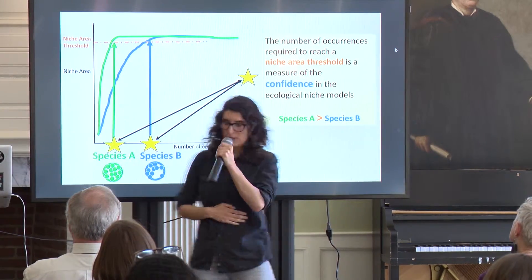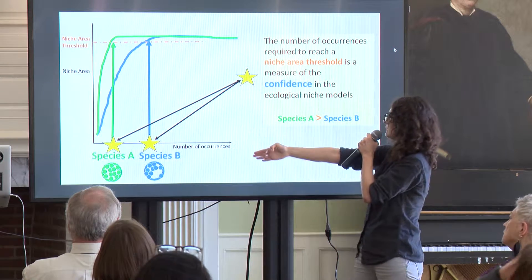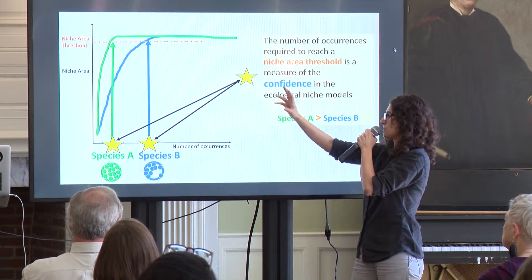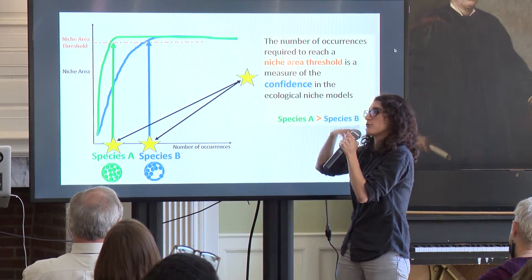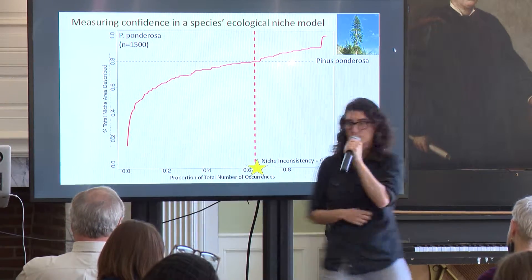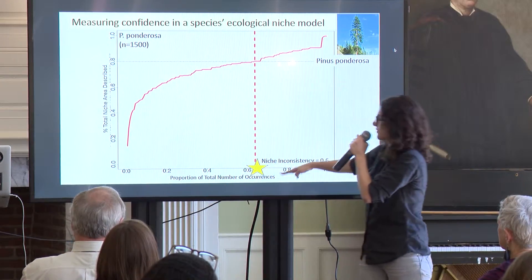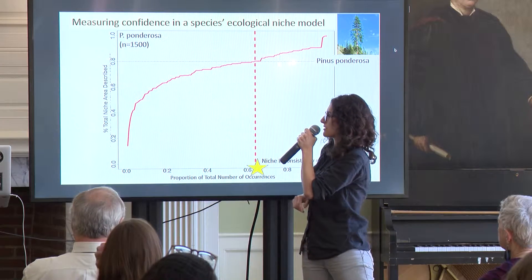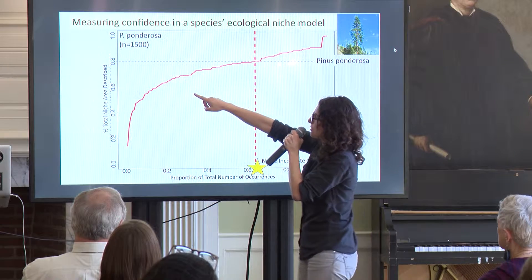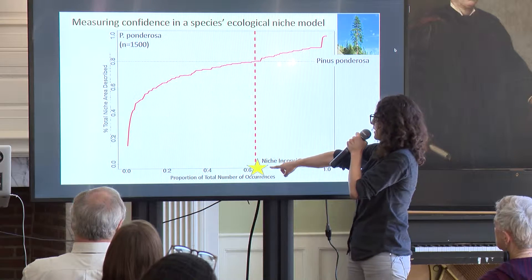We think that if we use that point of plateau as the measure of confidence, you could say: if Species A plateaus earlier, we're more confident about that species' niche prediction, and if Species B plateaus later, we're less confident. This is real data for Pinus ponderosa. This is the species' response curve — here is the proportion of total occurrences and the proportion of the niche described by those occurrences. You can see that if we're interested in reaching a threshold of, say, 80% of the niche described, for this species you'll need around 60% of the data.